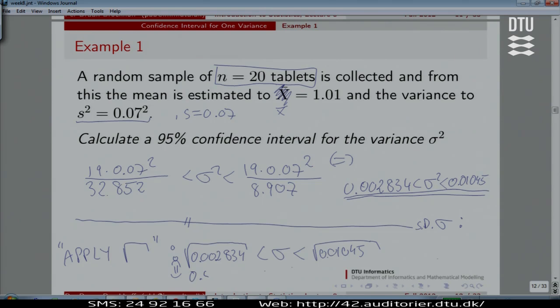So applying the square root means that we can take the square root of 0.002834 is less than sigma, less than the square root of 0.01045. And then we just have to find the numbers and we have something that we can interpret better in terms of what we were told so far. That the standard deviation is between 0.053 and 0.102.